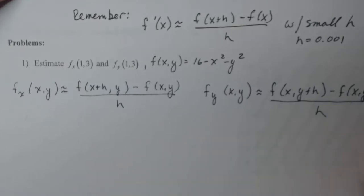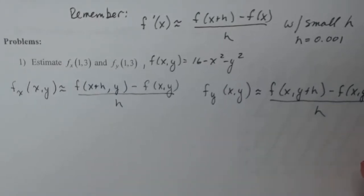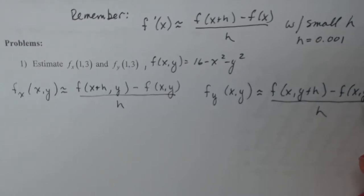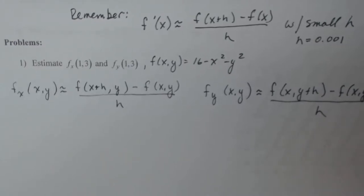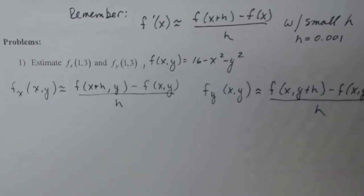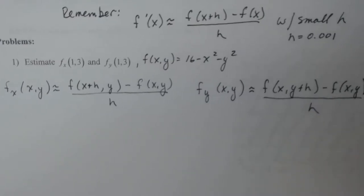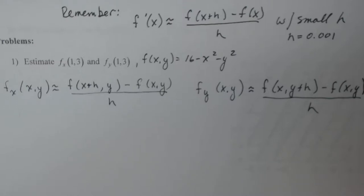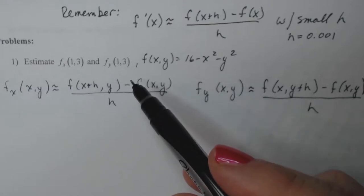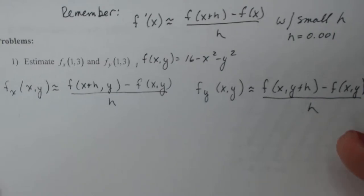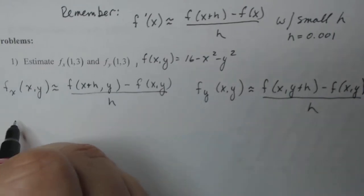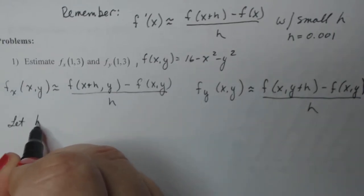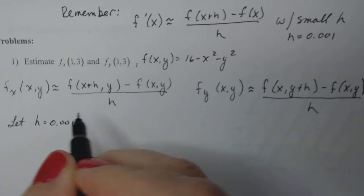The idea of looking in one direction actually changes the three-dimensional shape into two dimensions, and we add the extra dimension because we are moving up and down and that value makes a difference. This is how we estimate partial derivatives given a function and an ordered pair. Now let's actually do the work — I'm going to let h equal 0.001.